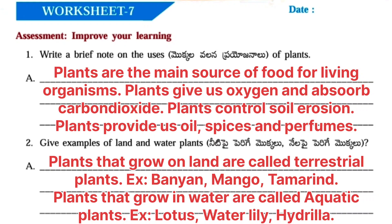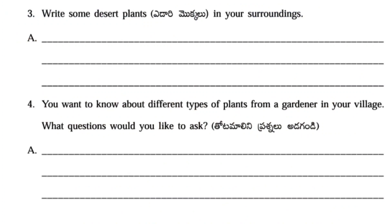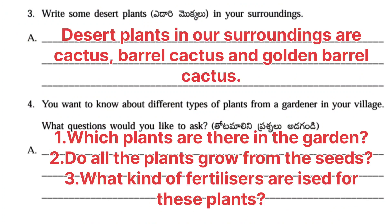Second question: give examples of land and water plants. Answer: Plants that grow on land are called terrestrial plants — example: banyan tree, mango tree, and tamarind tree. Plants that grow in water are called aquatic plants — that is lotus, water lily, and hydrilla, etc. Third question: write some desert plants in your surroundings. Answer: desert plants in our surroundings are cactus, barrel cactus, and golden barrel cactus.